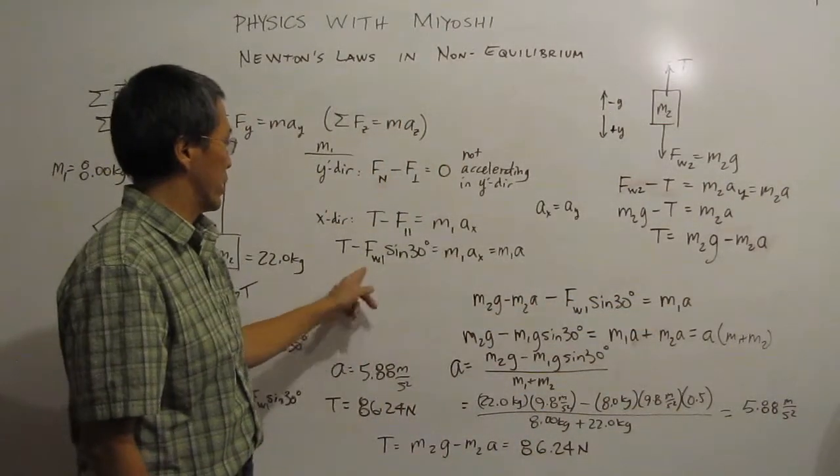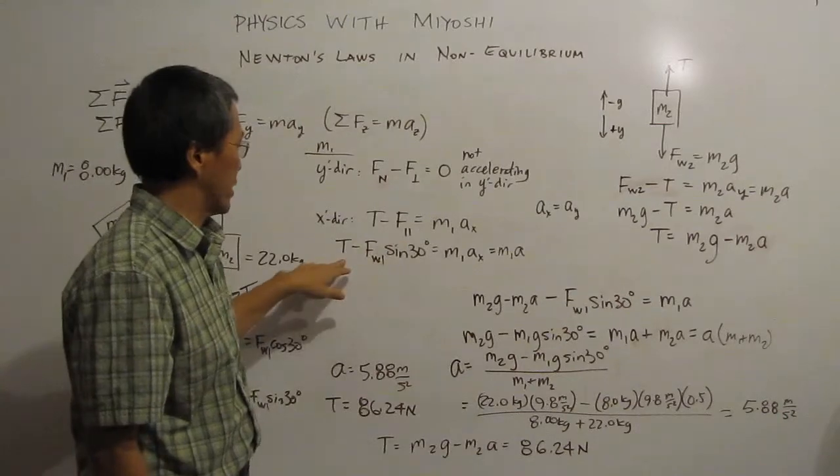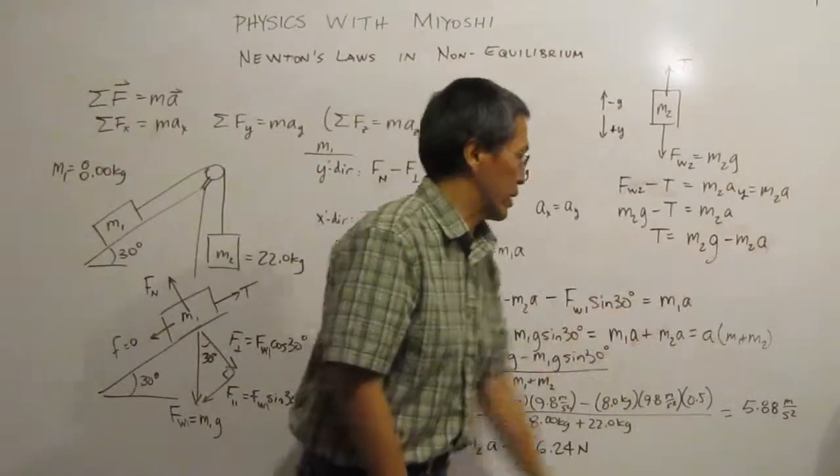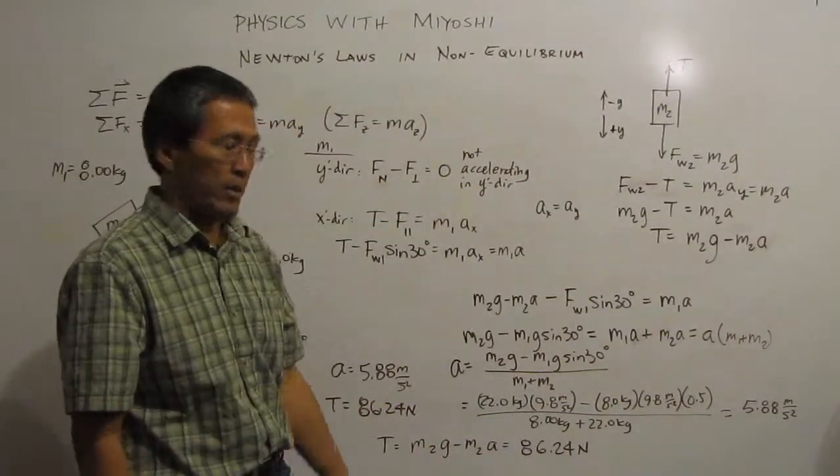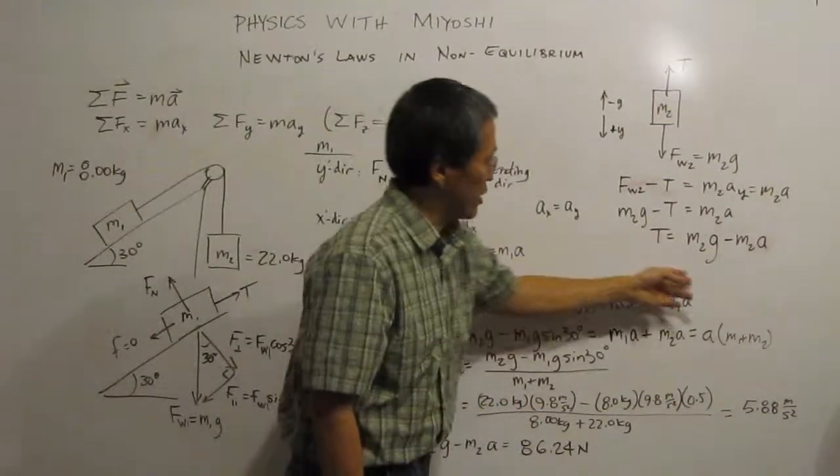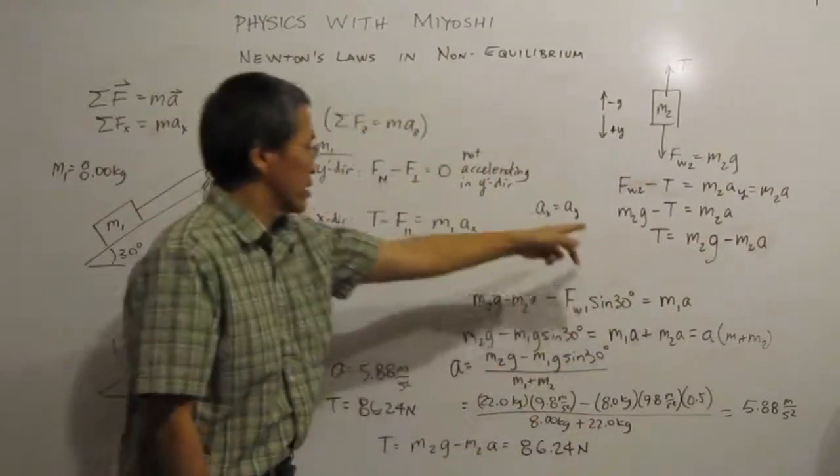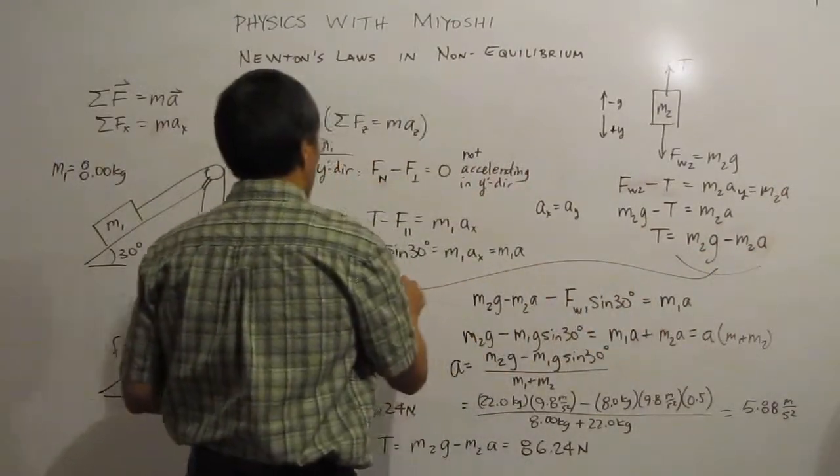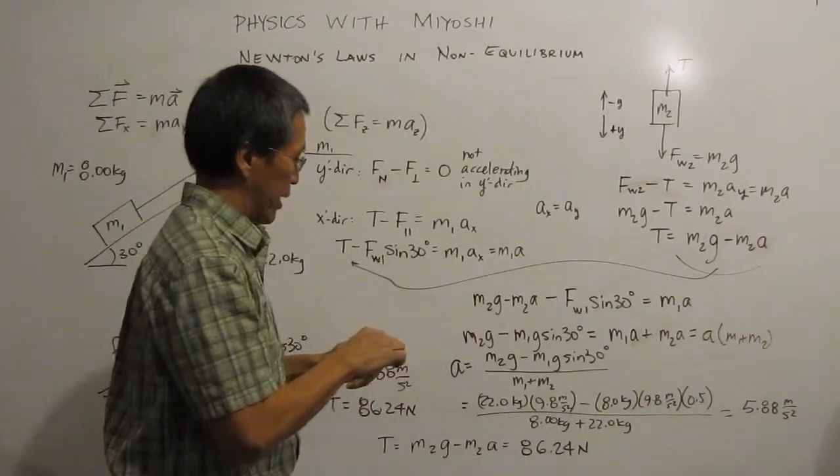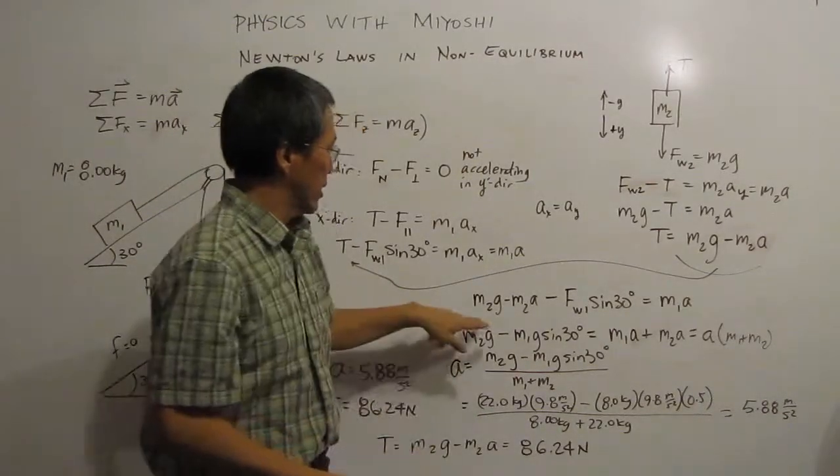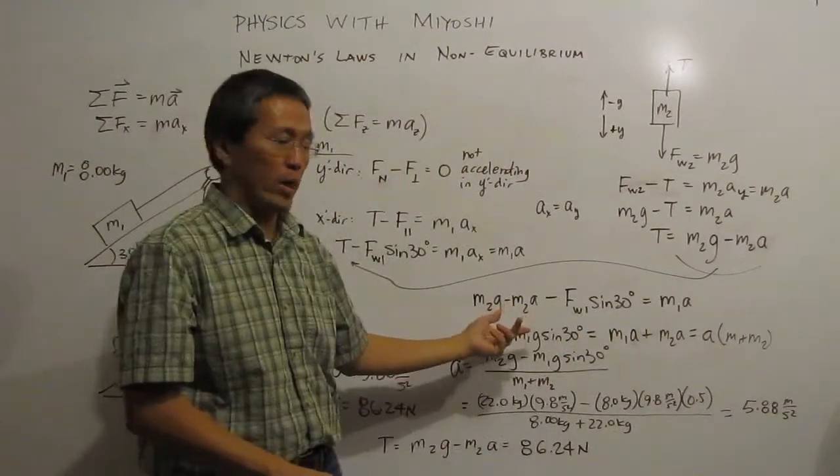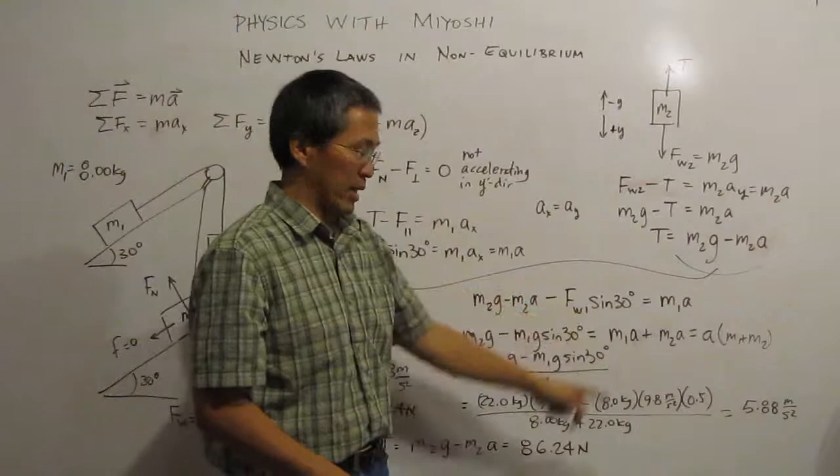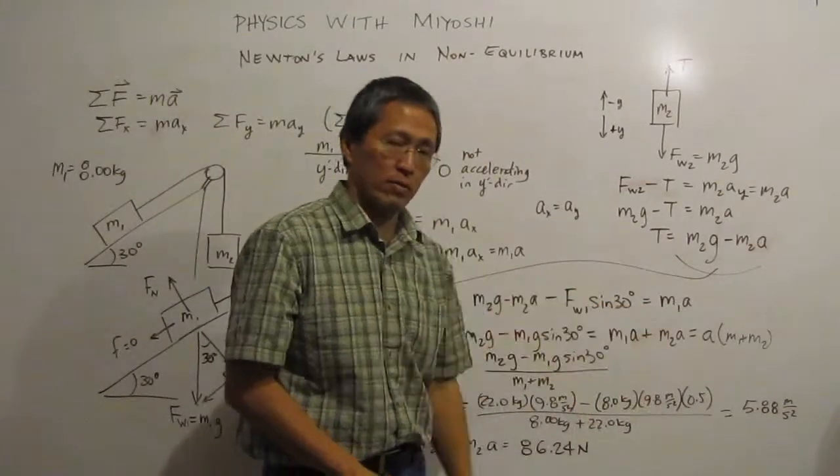So in this equation here, we know all these guys. We don't know the tension. We don't know the acceleration. And over here, we don't know the tension. We don't know the acceleration. So what I'm going to do is, what I did is I took this equation here, substituted that t that goes into there. And then I have this equation. So I have m2g minus m2a minus the force of weight 1 times the sine of 30 degrees is mass 1 times acceleration.